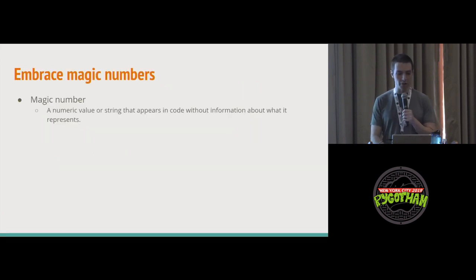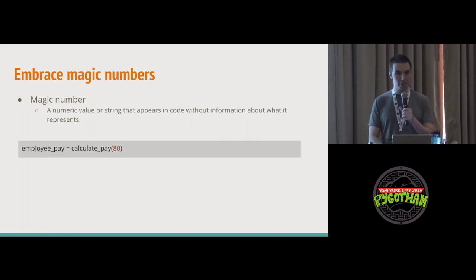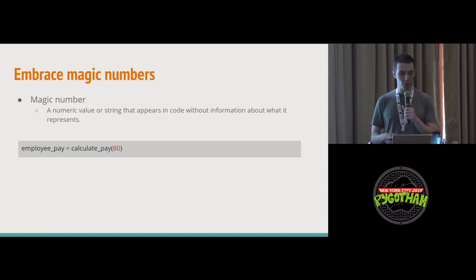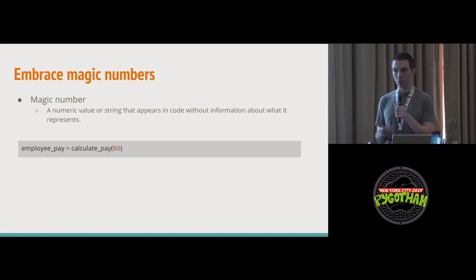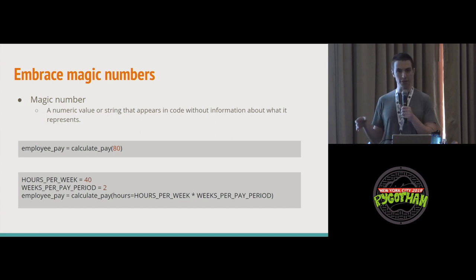Lastly, I want to talk about magic numbers. A magic number is a numeric value or string that appears in code without an explanation of why it's there. Here's an example: a calculatePay function taking 80 as a parameter — readers don't know where 80 comes from. As a developer community we've decided to replace magic numbers with named constants. In this case, hours per week is 40 and weeks per pay period is 2, which explains where 80 comes from. That makes a lot of sense in production code.